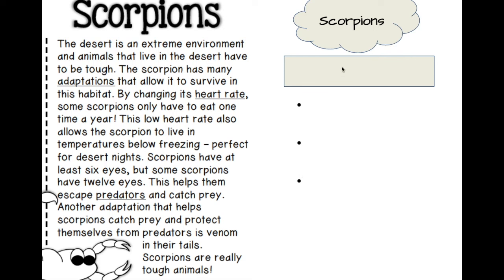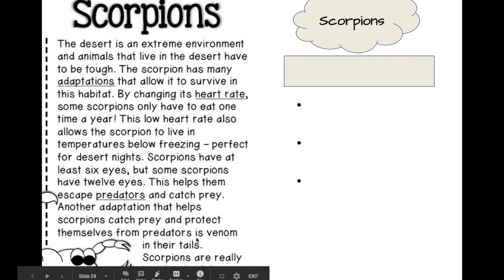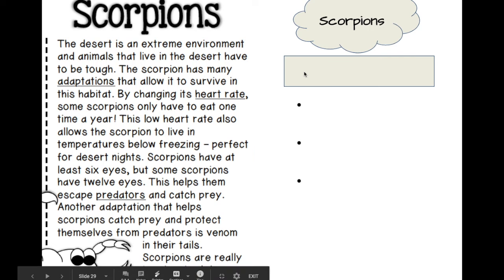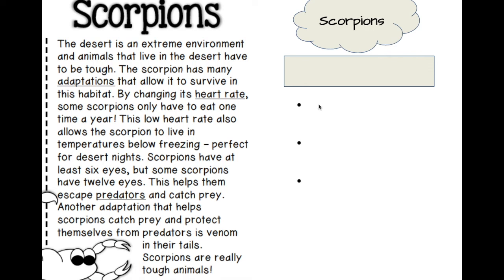Let's jump into the text and figure out what we're learning about scorpions. I see it says extreme environment, and then this word adaptations. So how it adapts itself — well, it can change its heart rate, it has six, maybe 12 eyes, and it has venom in their tails. So what I'm thinking is that our main idea probably has something to do with the scorpions' adaptations in the desert in order to help them survive. In our details, we talked about heart rate, its eyes, and its venom.